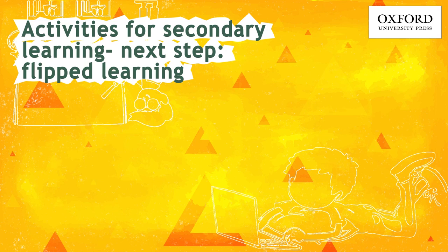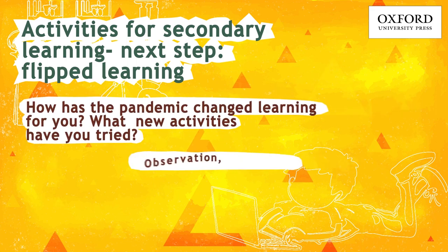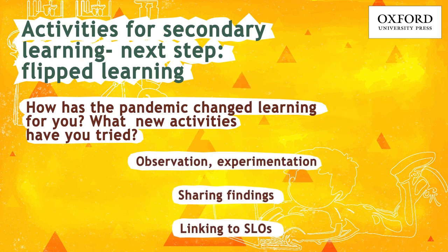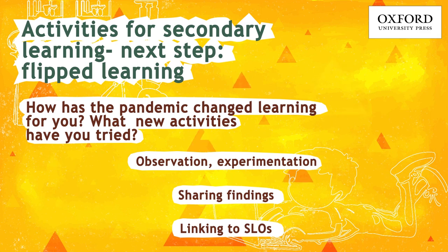Some activities for secondary learning in flipped learning: the next step is to enable students to share their findings — to talk about how they're linking what they've learned to the student outcomes. How has the pandemic changed learning for you as a teacher? What new activities have you tried through online teaching? If you'd like to share, please write in the chat box so we can discuss during the Q&A. I would love to hear your ideas about various activities you might have tried that we haven't discussed in this webinar.